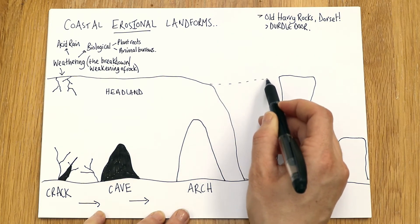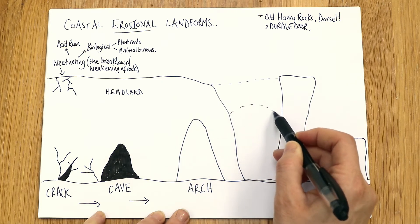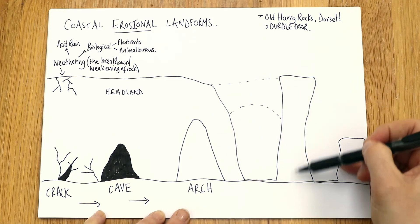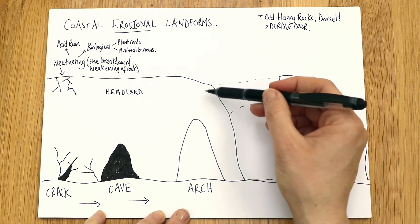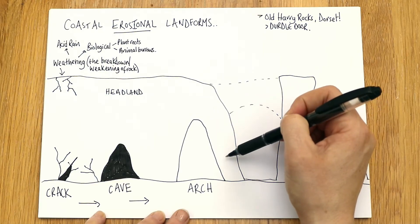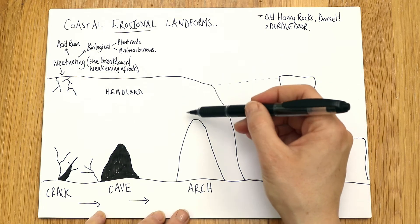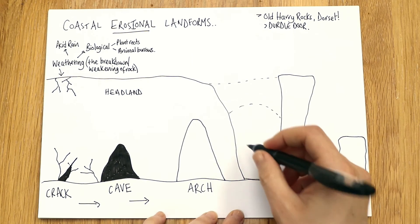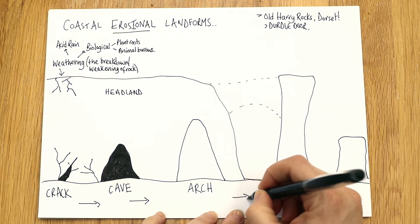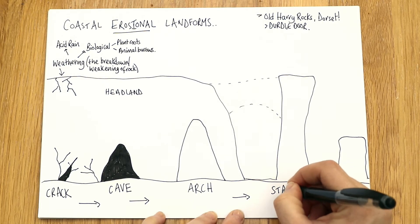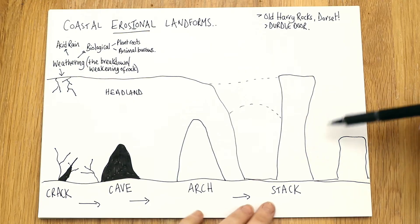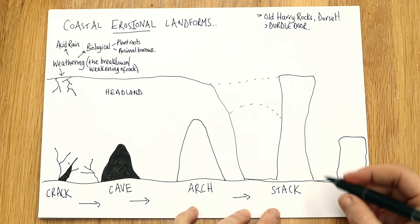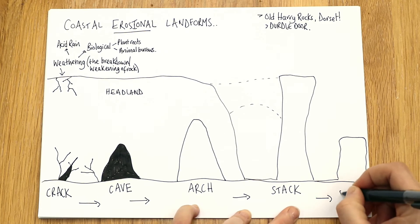Imagine an archway here — it falls and collapses, leaving a stack behind. So in the future, Durdle Door will just be a stack. Then the processes continue: once the arch roof has collapsed it turns into a stack, and over time the stack is eroded and collapses, leaving a stump.